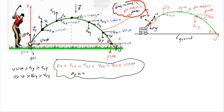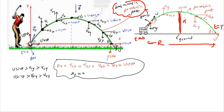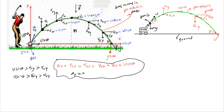Now let's define the key quantities: maximum height, range, and time of flight. At t = 0 the bomb is fired; after time t it strikes the ground. Maximum height H is the maximum height ascended by the projectile measured from the ground. Range is the maximum horizontal distance of the point of striking from the point of projection. Time of flight T is the total time in the air.